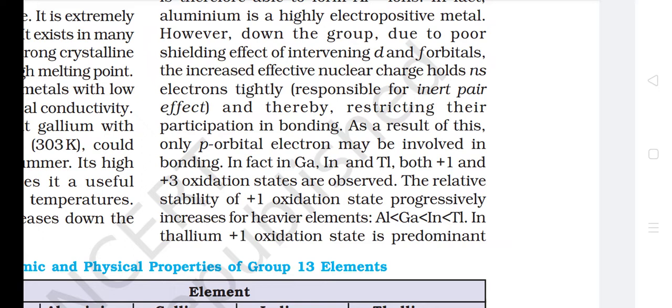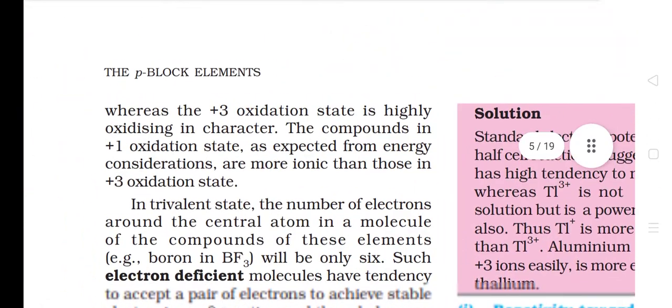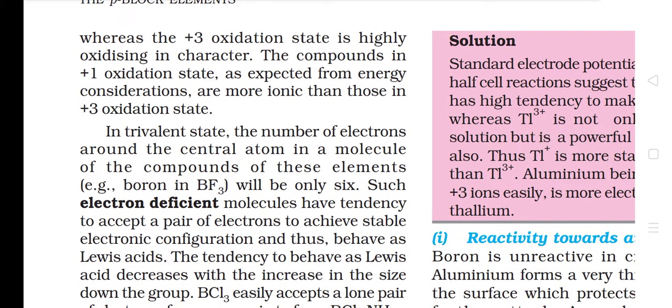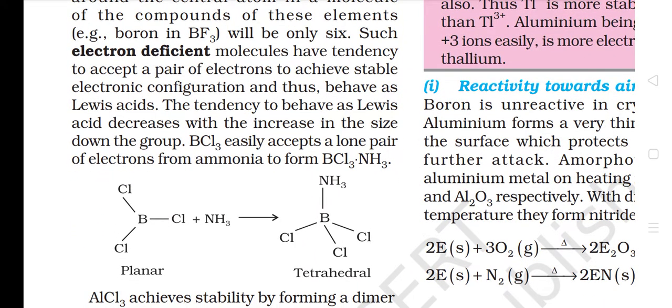The relative stability of the +1 oxidation state progressively increases for heavier elements: Ga < In < Tl. In thallium, the +1 oxidation state is predominant, whereas the +3 oxidation state is highly oxidizing in character. The compounds in the +1 oxidation state are more ionic than those in the +3 oxidation state. In the trivalent state, the number of electrons around the central atom — e.g. boron in BF3 — is only six. Such electron-deficient molecules have a tendency to accept a pair of electrons to achieve stable electronic configuration and thus behave as Lewis acids. The tendency to behave as a Lewis acid decreases with increase in size down the group.